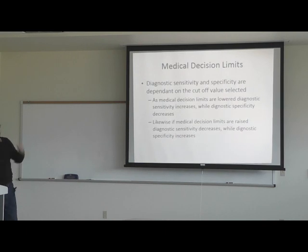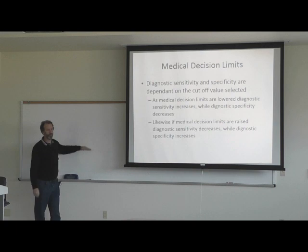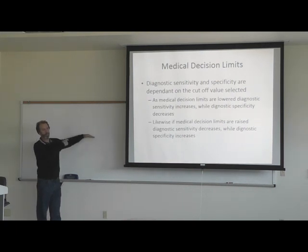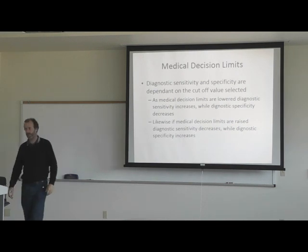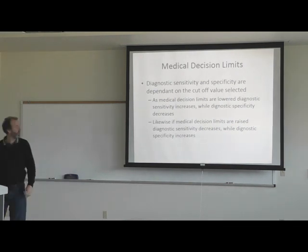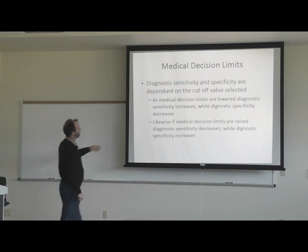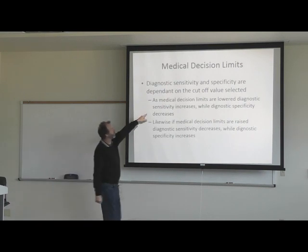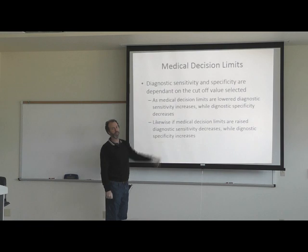Medical decision limits are the limits where you decide if they're above that, they have the disease, or below that they don't — or vice versa, depending on what kind of analyte you're talking about. As medical decision limits are lower, diagnostic sensitivity increases. Why is that?